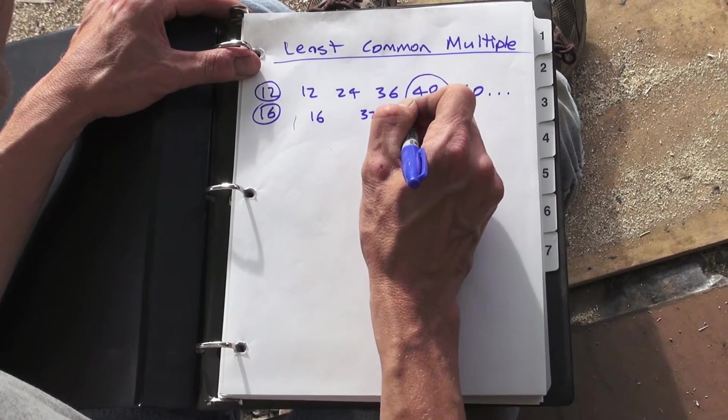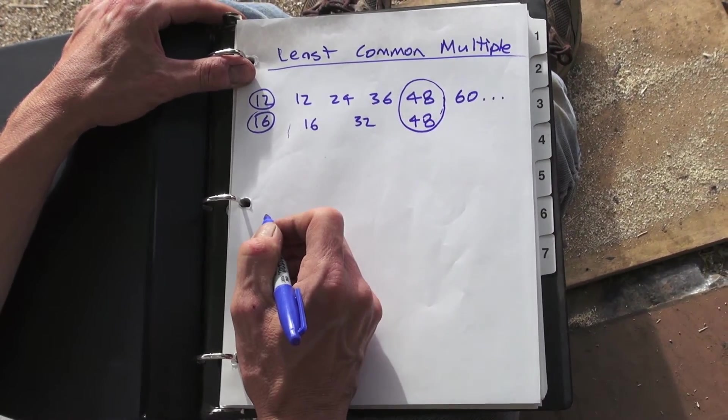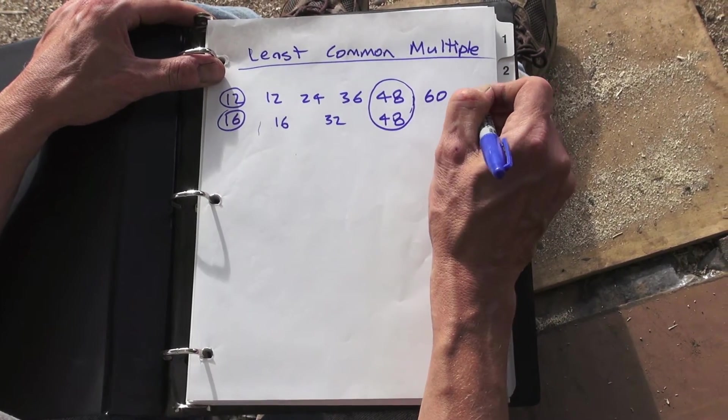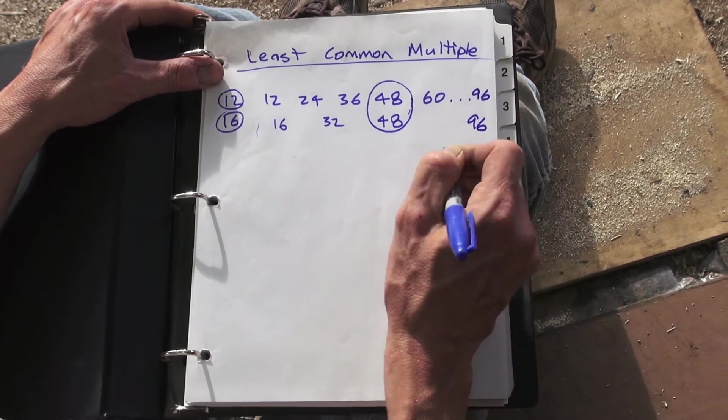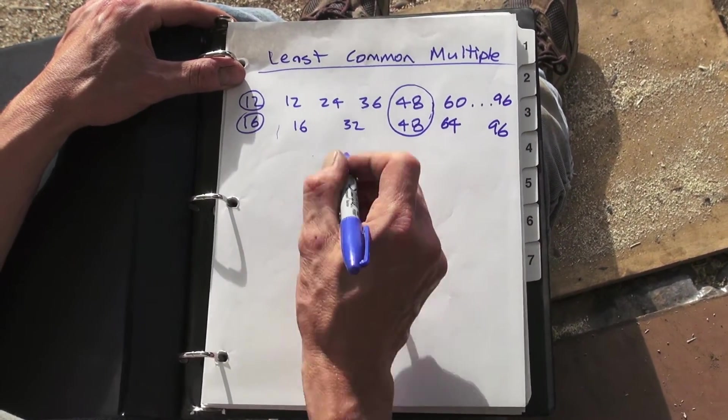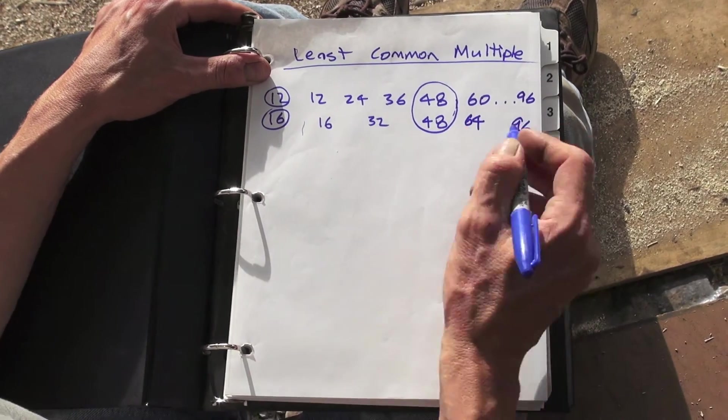This is the first one you come to that's in both lists, right? 48 is a common multiple. It's the lowest one. If you kept going you'd get to what we had before—96 would be in both lists, right? But there'd be no other common ones before that. That's one way you can find least common multiple: just make two lists, or three lists if you had more than a couple numbers.